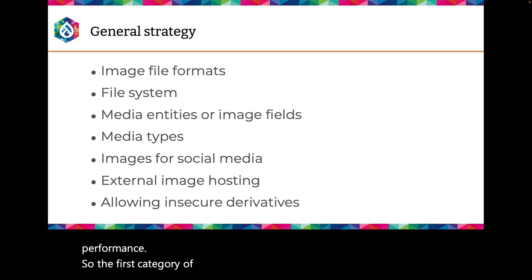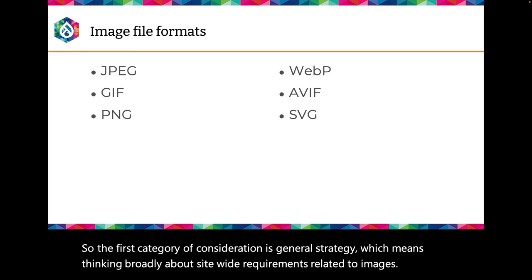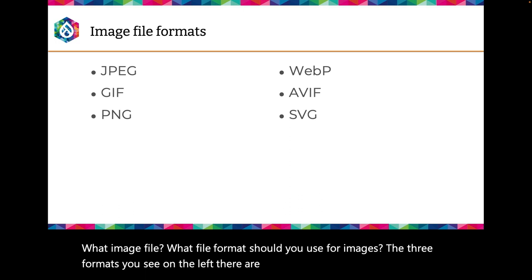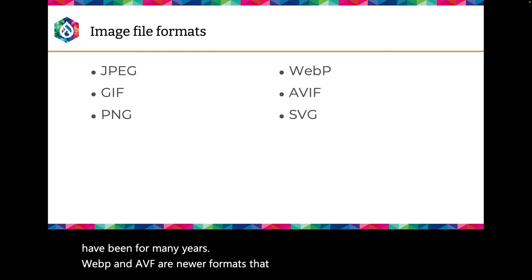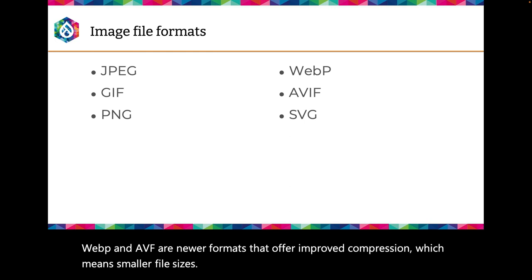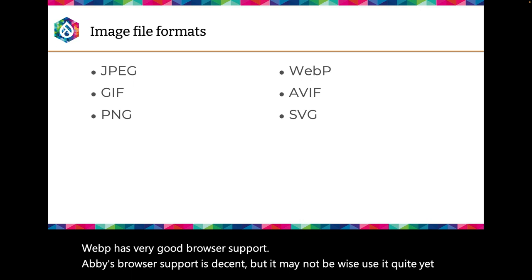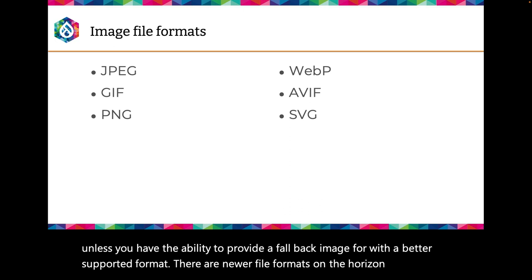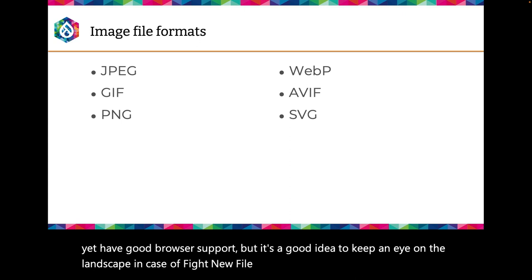The first category of consideration is general strategy, which means thinking broadly about site-wide requirements related to images. What file formats should you use? The three formats — JPEG, GIF, and PNG — are well-supported by web browsers and have been for many years. WebP and AVIF are newer formats that offer improved compression, which means smaller file sizes. WebP has very good browser support. AVIF's browser support is decent, but it may not be wise to use it quite yet unless you have the ability to provide a fallback image with a better supported format.